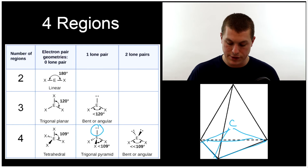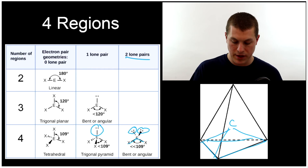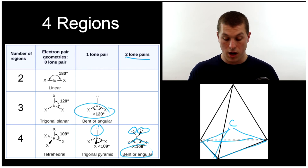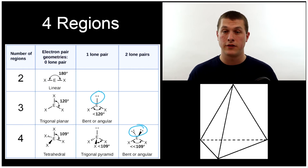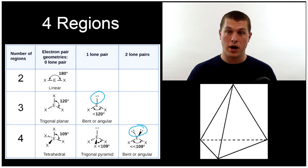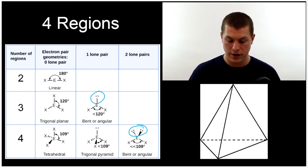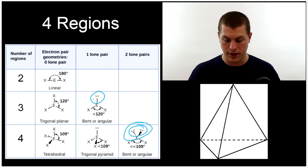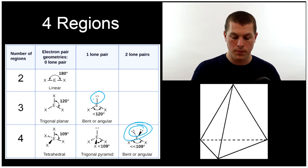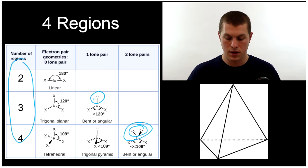If we get two lone pairs with four regions of electron density, we once again get a bent shape. Notice the bent shape here and the bent shape from three regions are similar, but they have slightly different bond angles. The reason is that all electrons are negative and repel each other. When you have two lone pairs repelling the bonds, it squeezes them together more than just one lone pair does, which is why the bond angle gets smaller.